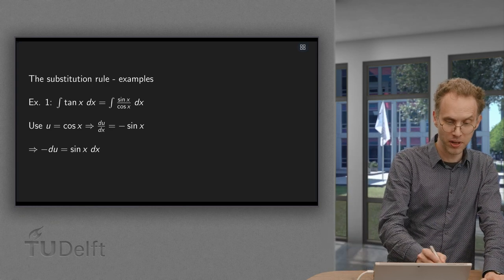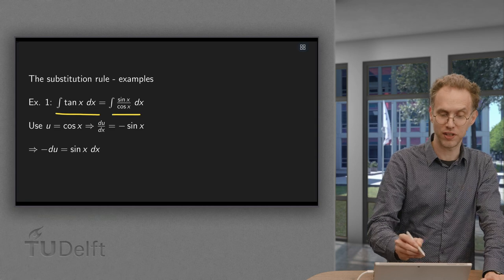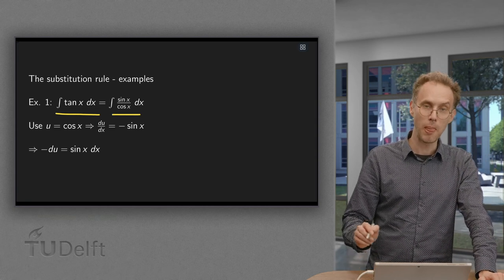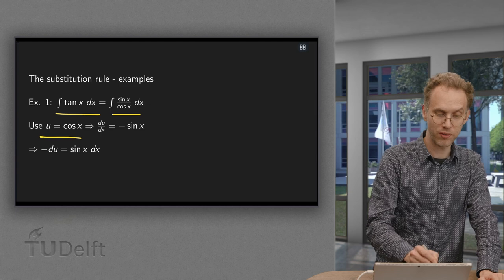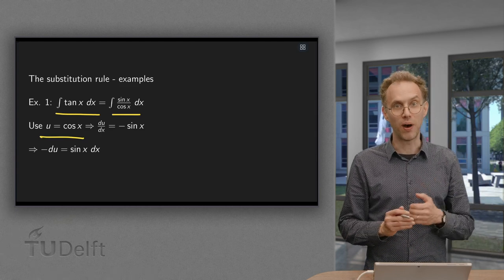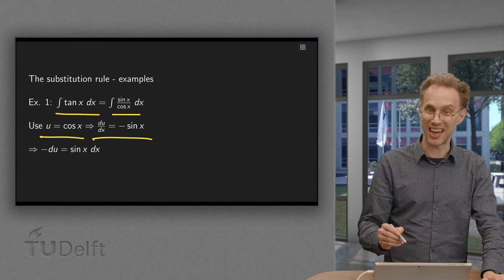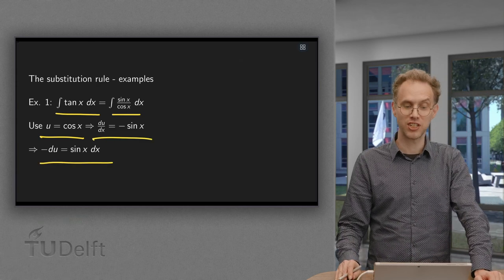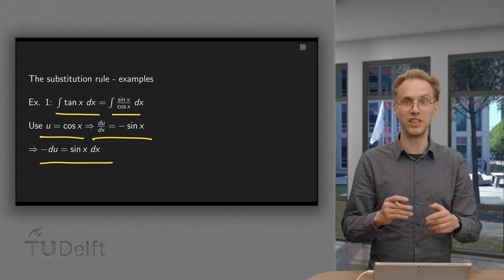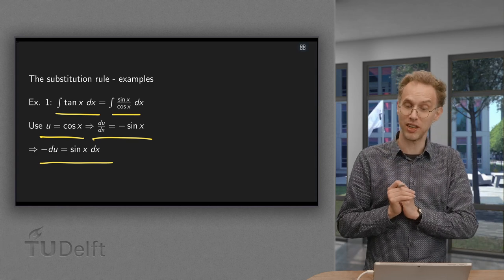So first another example: tangent of x equals sine of x over cosine of x. What can we do? We can use the substitution u equals cosine of x. And why does this work nicely? Well, du/dx equals minus sine of x, so minus du equals sine x dx, which is in the numerator of our integral.